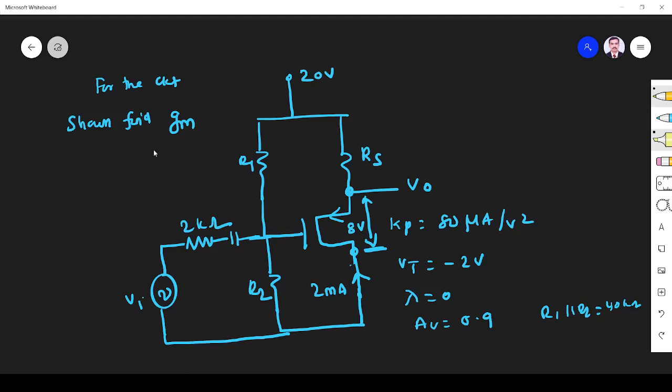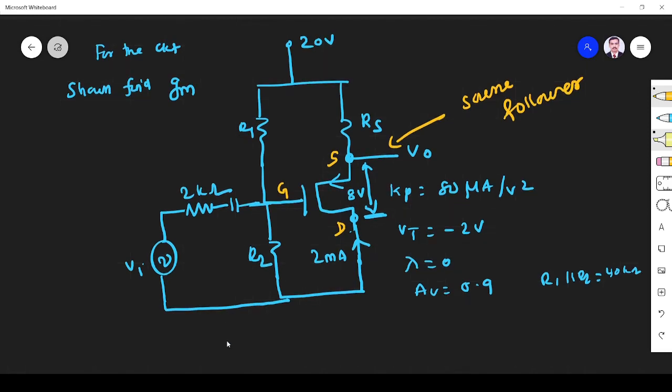Next problem is for the circuit shown in figure, find gm transconductance. They have given some circuit. You see what is the circuit here? The output is taken across source terminal because this is source, this is gate, this is drain. The output is taken across source terminal, so it is the source follower. That is the main thing. Now what we have to find? We have to find gm.